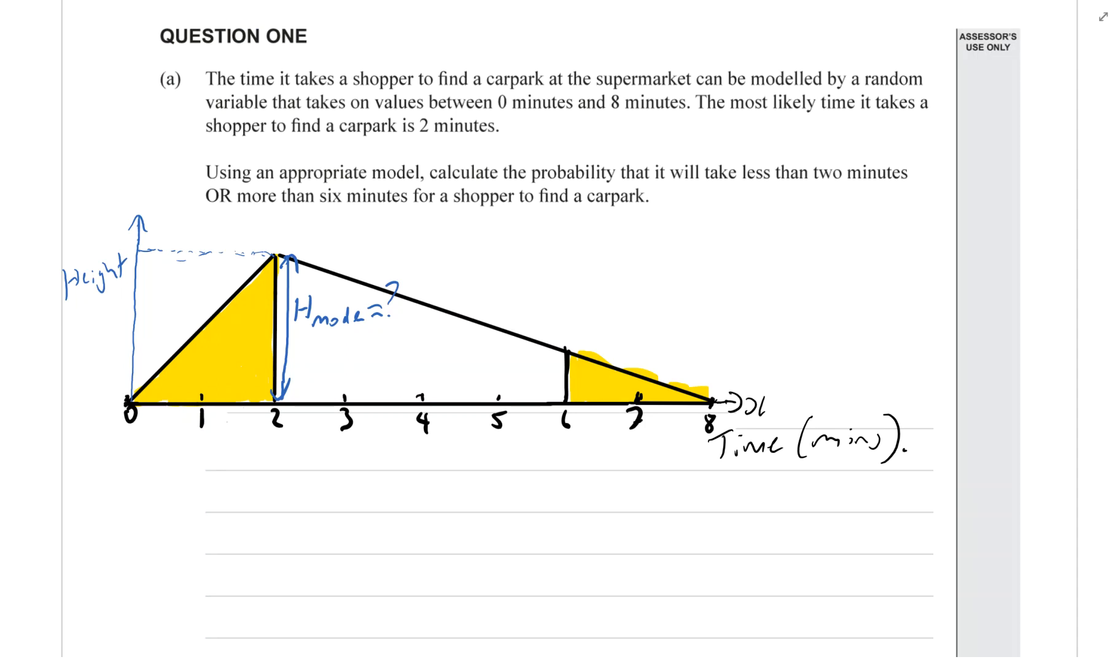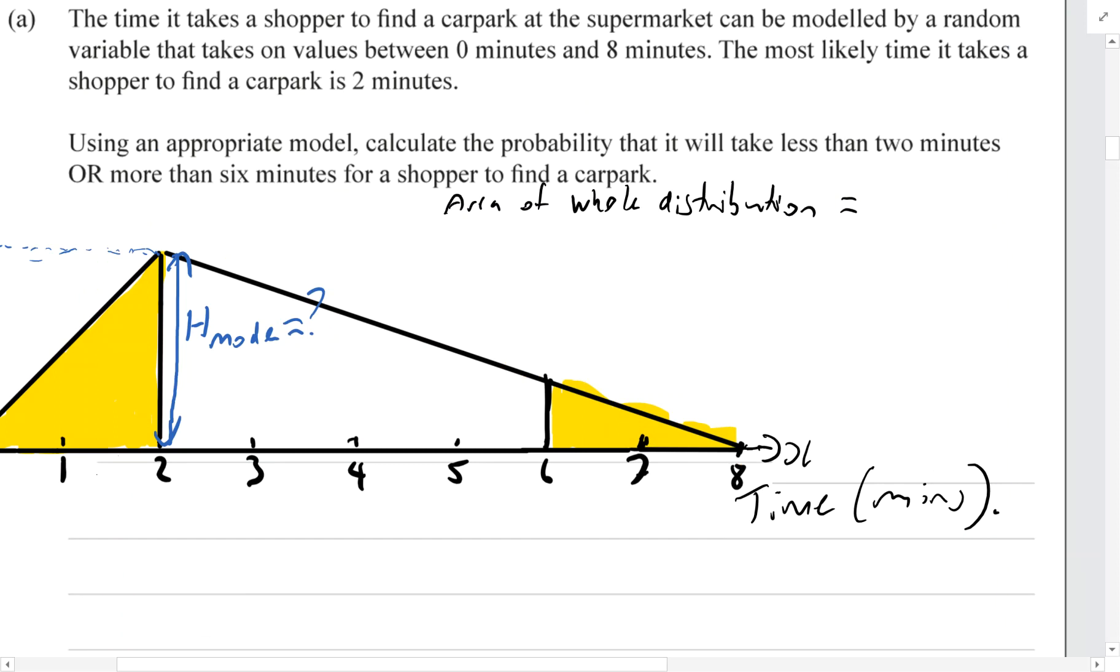So how we do that is we know that the area of the whole thing is what? Well, remembering that because we're dealing with a continuous variable, time, the probability is going to be represented by the area. It's not going to be represented by the height. So we know that probabilities of all possible values must add up to one. That means that the area of this whole triangle is going to be equal to one. And that's always true.